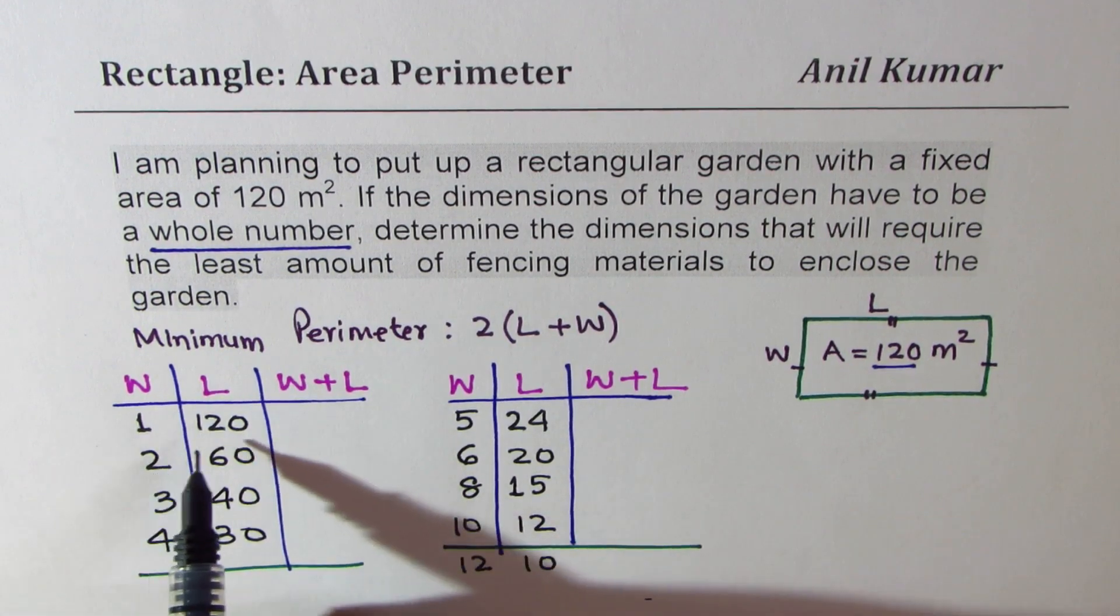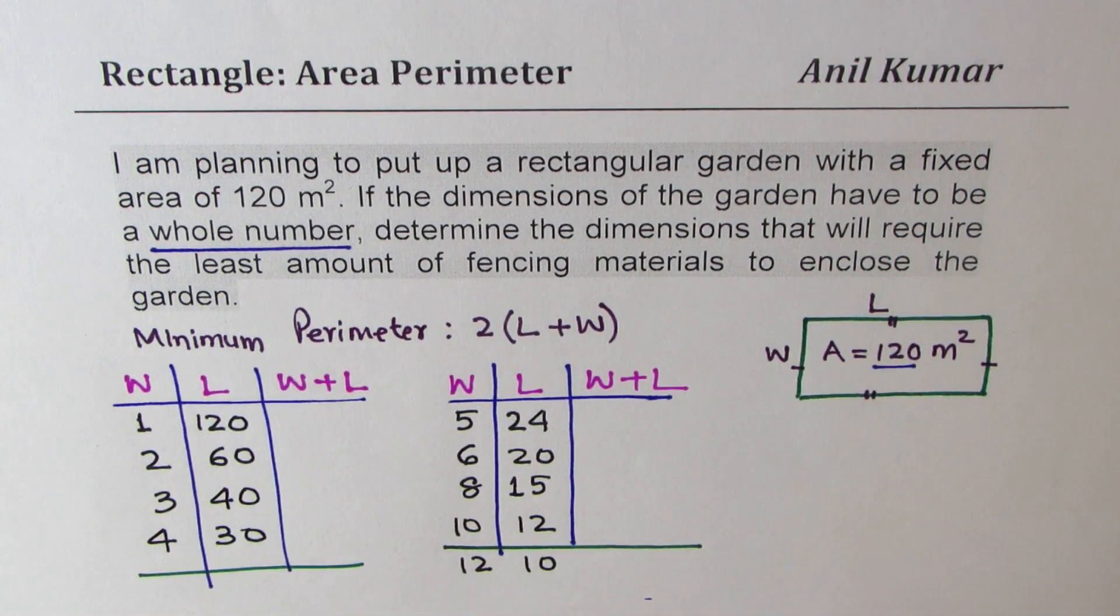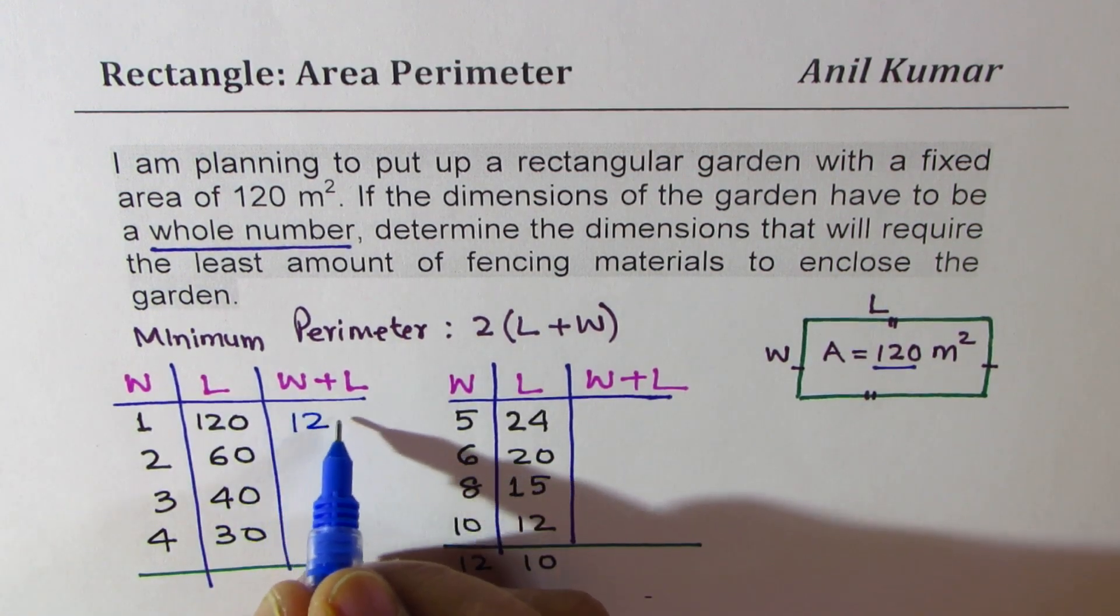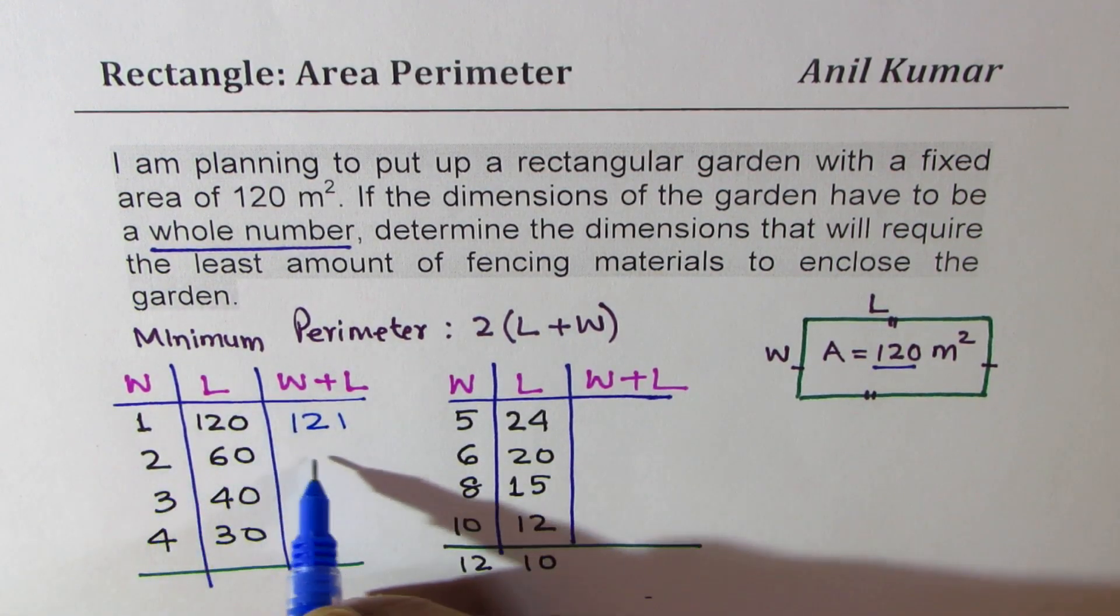Let's add them now. 120 plus 1 is how much? 121, right? Let me write in a different thing. 121. And 60 plus 2, 62.